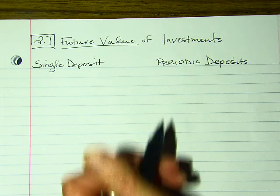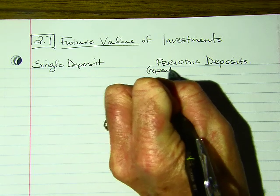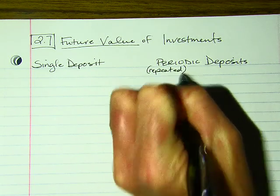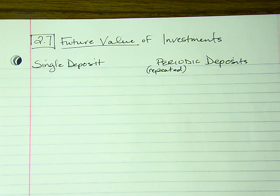Periodic means you have a repeated deposit — like depositing the same amount every month, every year, or every day. It means you're repeatedly depositing into the account. Each one has a different formula.